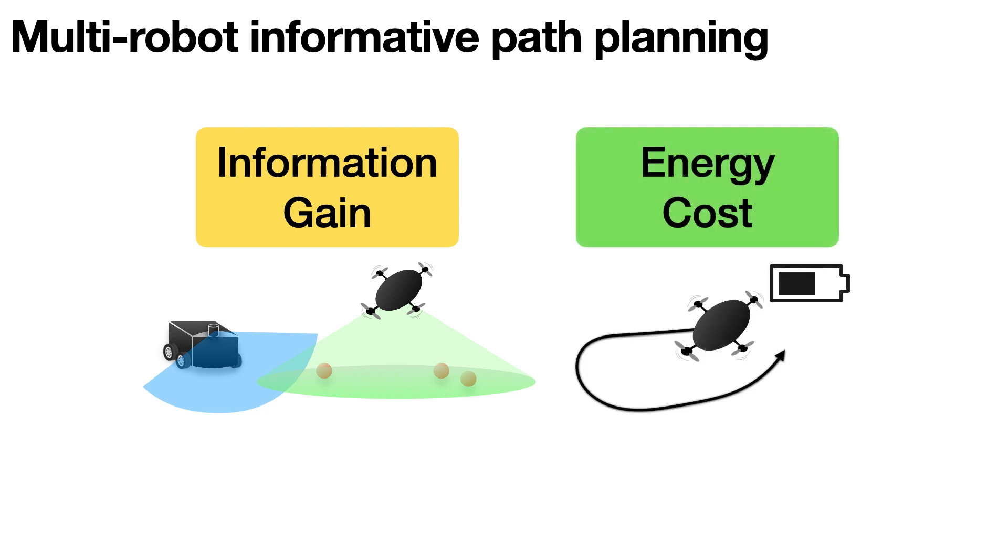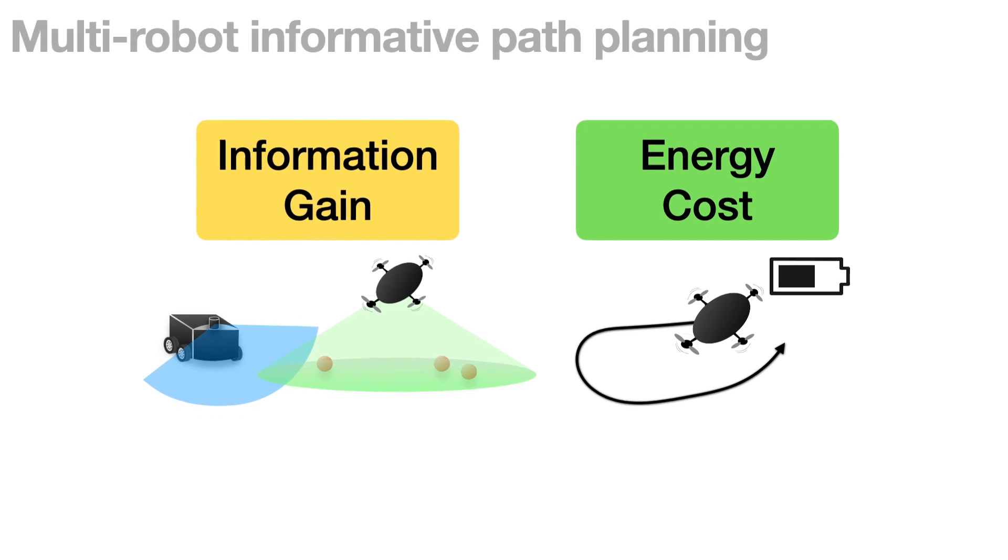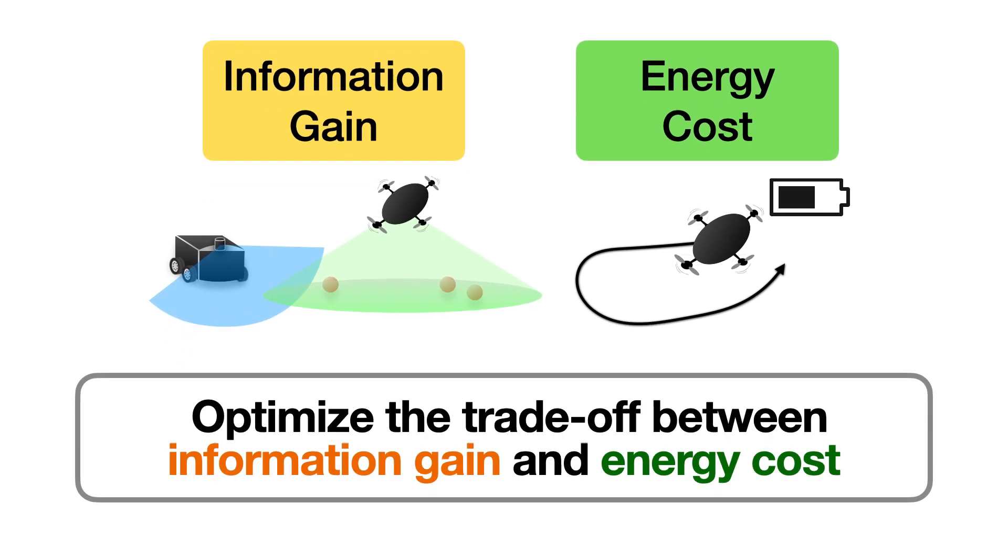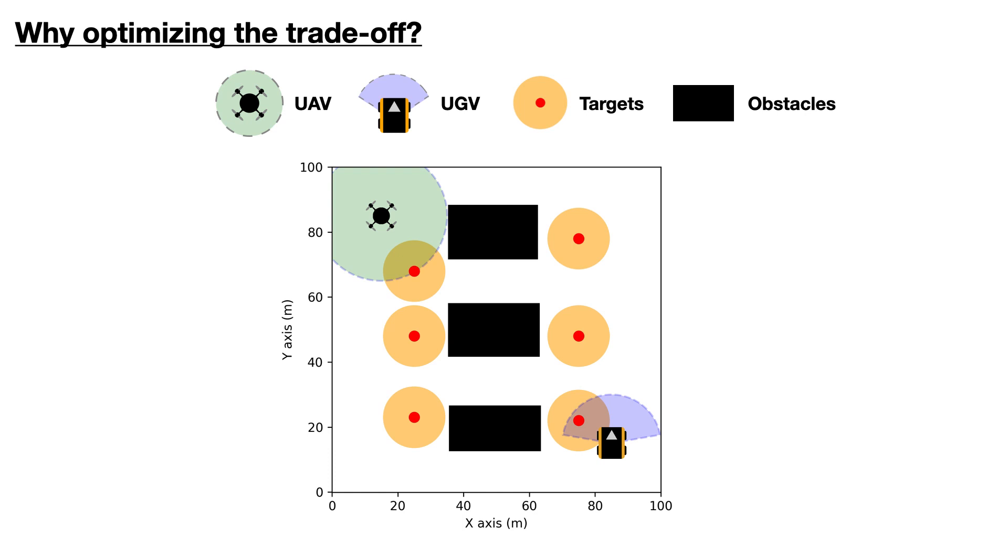In practice, higher information gain often requires higher energy expenditure such as control effort, fuel cost, or distance traveled. Therefore, we want to optimize this trade-off in a common objective during planning. The benefit of such formulation can be seen through a simple example.